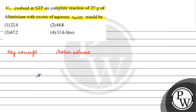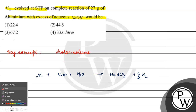For this particular reaction, aluminium reacts with sodium hydroxide (aqueous NaOH) to give sodium aluminate and three-by-two moles of hydrogen gas.